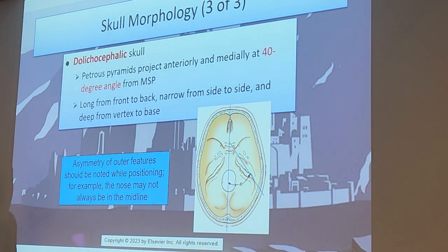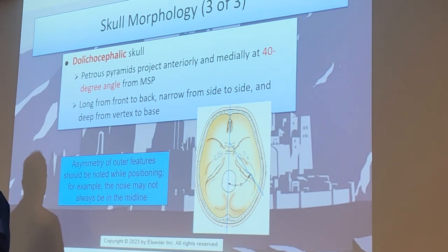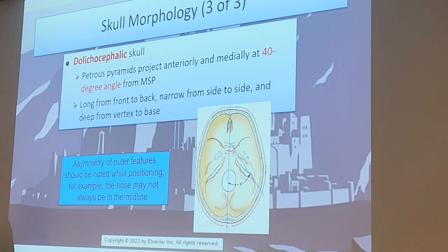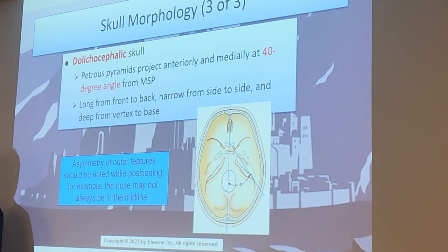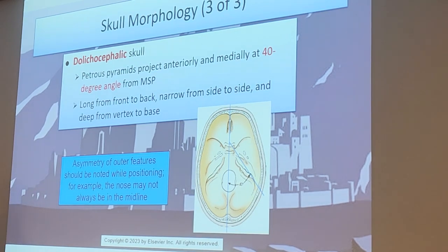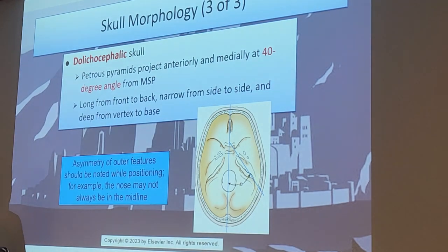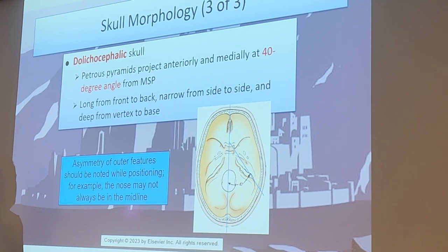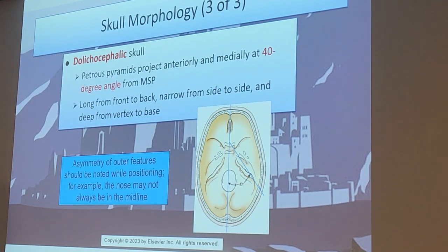Last one - the dolichocephalic skull. The features on this one will project anterior and medial at a 40-degree angle. This skull is long from front to back, narrow from side to side, and deep from vertex to base. So you need a long, skinny head for your dolichocephalic.